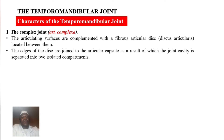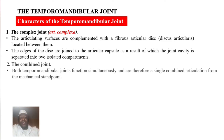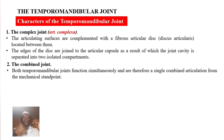The characteristics of this joint: firstly, it is a complex joint — articulatio complexa — where the articulating surfaces are complemented with a fibrous articular disc (discus articularis) between them, and the edges of the disc are joined to the articular capsule, separating the joint cavity into two compartments. Secondly, it is a combined joint — both temporomandibular joints function simultaneously and are therefore a single combined articulation from the mechanical standpoint.